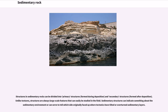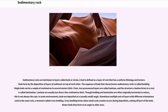Structures in sedimentary rocks can be divided into primary structures and secondary structures. Unlike textures, structures are always large-scale features that can easily be studied in the field. Sedimentary structures can indicate something about the sedimentary environment or can serve to tell which side originally faced up where tectonics have tilted or overturned sedimentary layers. Sedimentary rocks are laid down in layers called beds or strata. A bed is defined as a layer of rock that has a uniform lithology and texture. Finer, less pronounced layers are called laminae, and the structure laminae form in a rock is called lamination.